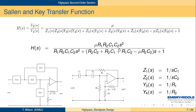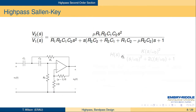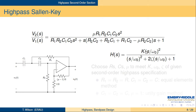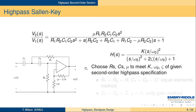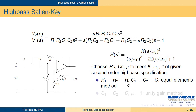There's our high-pass transfer function — it's got the right form. Now we just have to match up ω₀ and 2ζ. We're trying to make it line up with K times (S/ω₀)² over (S/ω₀)² plus 2ζ(S/ω₀) plus 1. With this design, we pick the R's, C's, and gain of the non-inverting amplifier stage to give us K, ω₀, and ζ for the specification. There are two methods, just like for the low-pass.